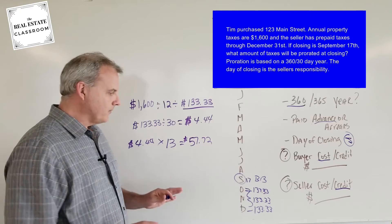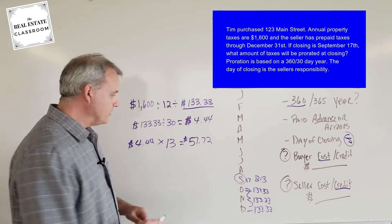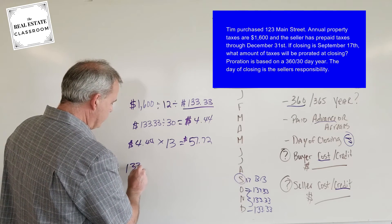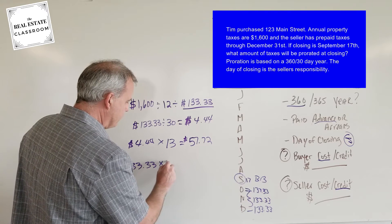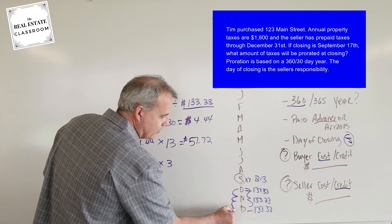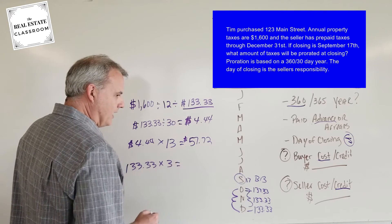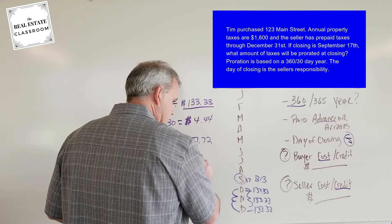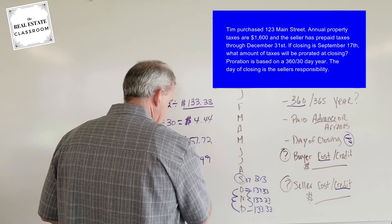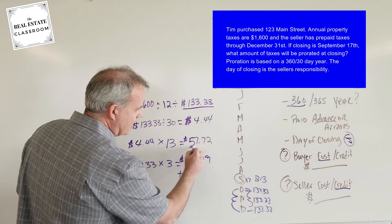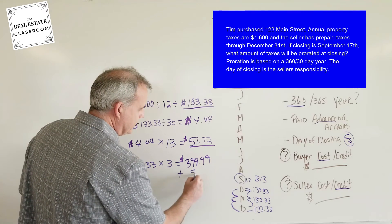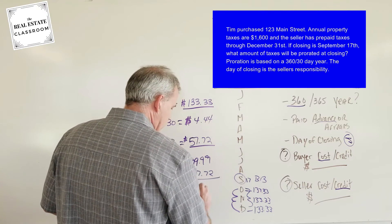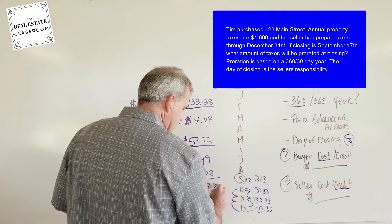So here's what we're going to do. To find out the total amount that's owed, we're going to take $133.33, which is our monthly rate, and multiply it by three full months, which is October, November, December. And that should give us a total of $399.99. And then we're going to add in our month of September, a total of $57.72. And when we add all of this up, that should give us a grand total of $457.71.